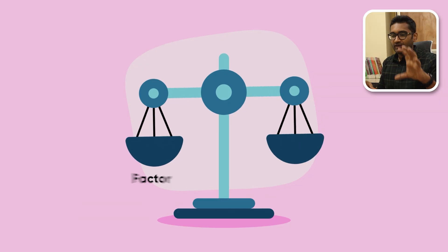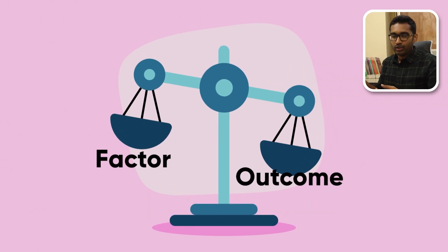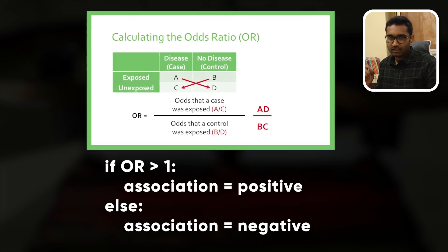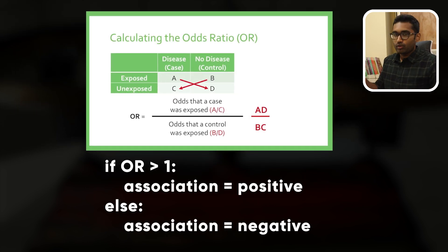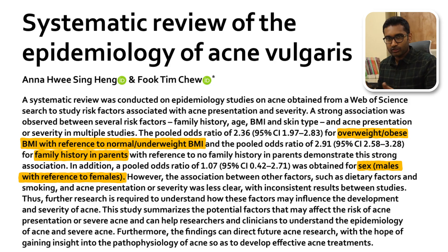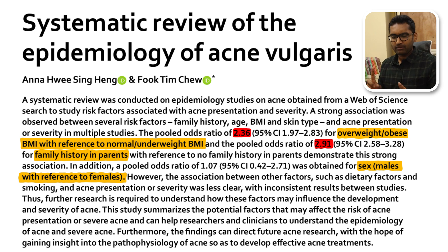The odds ratio uses any factor and outcome to measure association. For example, family history as a risk factor with acne as the outcome has an odds ratio of 2.75 — very strong. Obesity has an odds ratio of 2.3, and male gender is mild in comparison. These are strong risk factors.